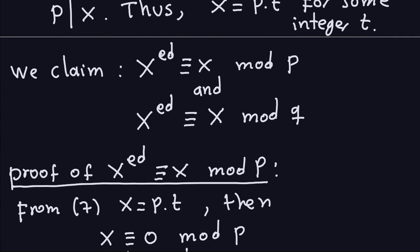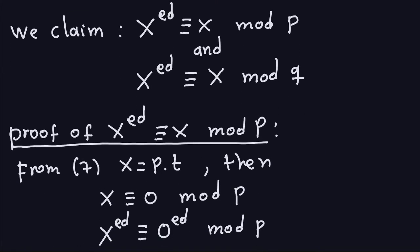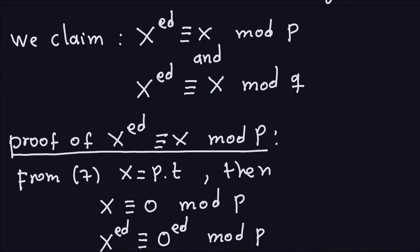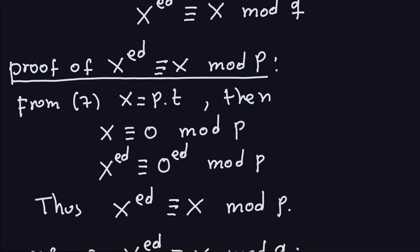Proof that x^(ed) ≡ x mod p: From equation 7, x equals p times t, so x ≡ 0 mod p. The reason is that if p divides x, then x is congruent to 0 mod p — equivalently, p divides x minus 0. Then x^(ed) ≡ 0^(ed) mod p, because I raise both sides to the ed power, which is valid for congruences. Both sides become 0, and by transitivity, x^(ed) ≡ x mod p. That proves the first claim.